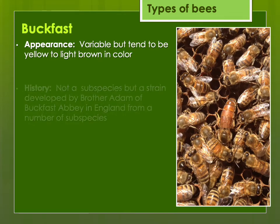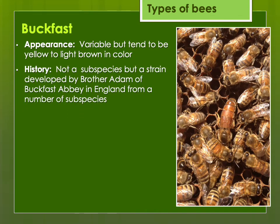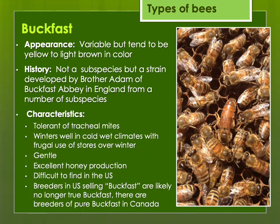The Buckfast bees tend to be variable in color. They're a strain selected by Brother Adam of Buckfast Abbey in England from a number of other types of strains and subspecies of honeybees. They were bred to be tolerant of tracheal mites. Being from England, they do very well in cold, wet climates. They're gentle. They're hard to find in the U.S. — breeders here may sell Buckfasts but they're probably not true Buckfasts; there are breeders of pure Buckfasts in Europe and Canada.